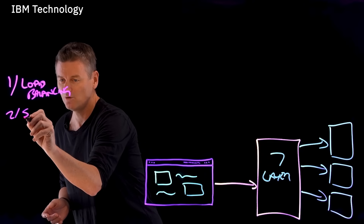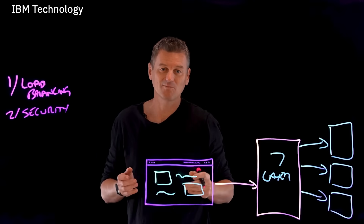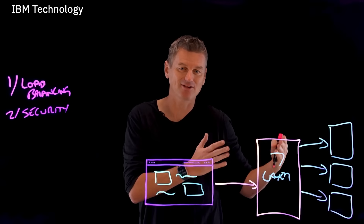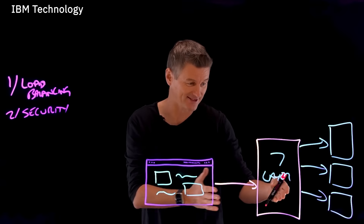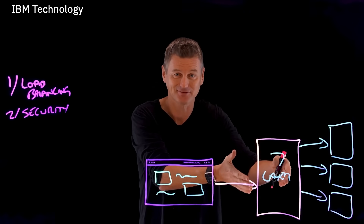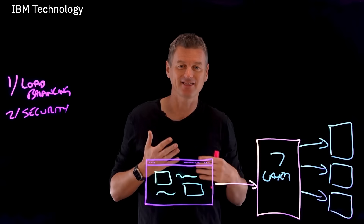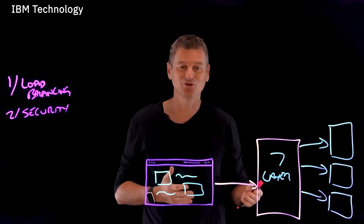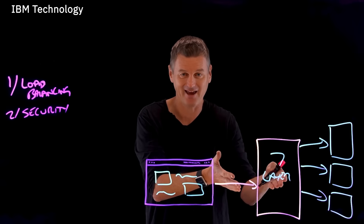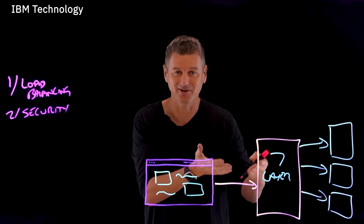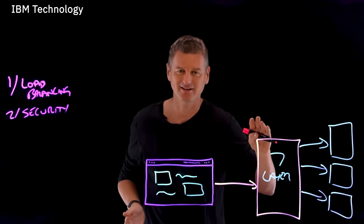Number two is security. We're never letting the outside world know what's back here at all — all they ever see is the reverse proxy. Even though it's just reaching out and tasking those servers with the work, to the requester's web browser it looks like it's all coming from right here. It takes all the credit, which is kind of rude, but we'll let it slide.